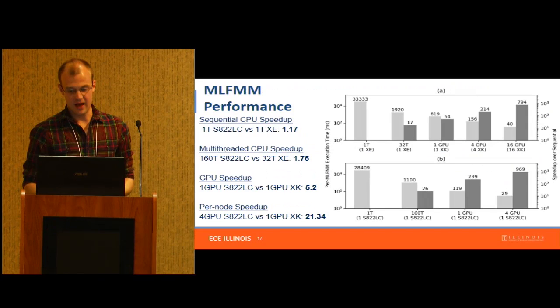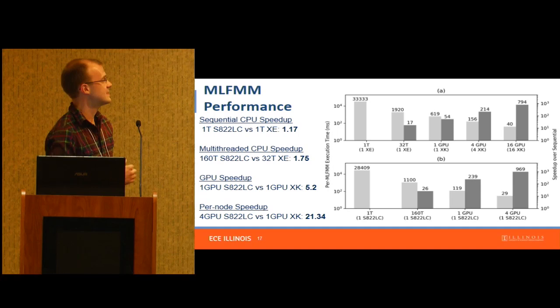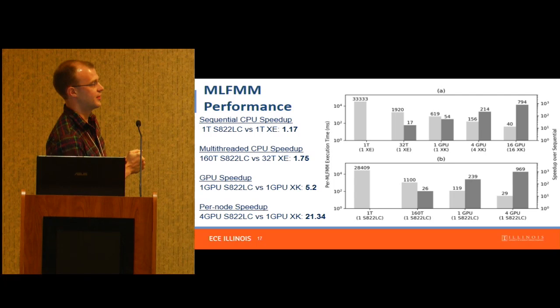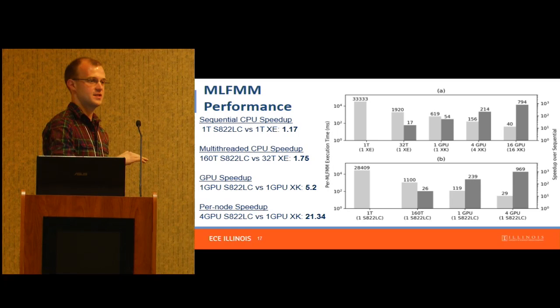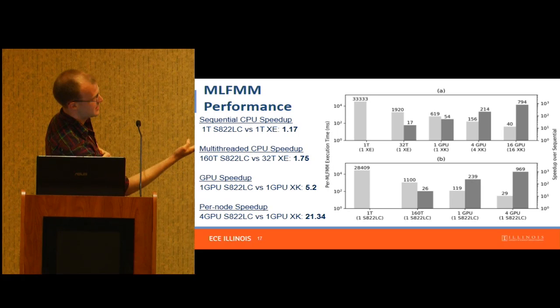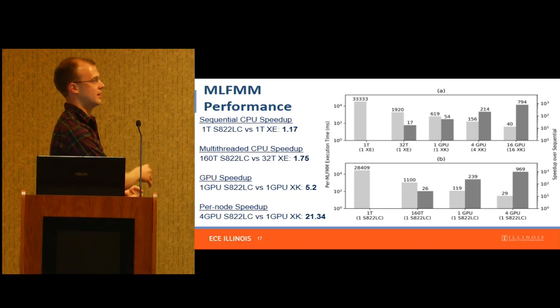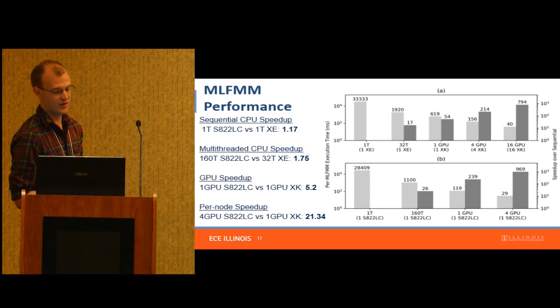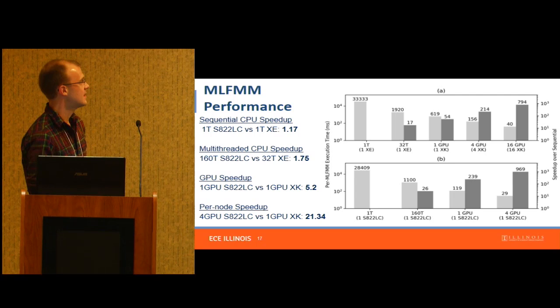The great news is that it's way, way faster. On the top right is performance running on XE and XK nodes on Blue Waters; on the bottom right is performance on the 822 under different characteristics. The one-thread case is a sequential CPU execution. When we use four GPUs on the IBM system, we get a 969x speedup over one CPU thread. Using 160 threads gives a 26x speedup. Moving from Blue Waters to this new system, single-thread CPU performance changed by only 17%.